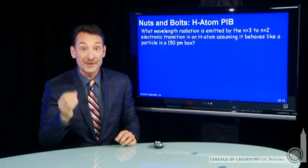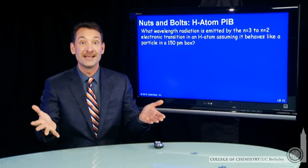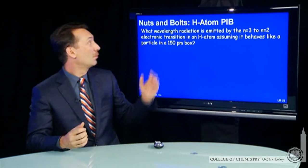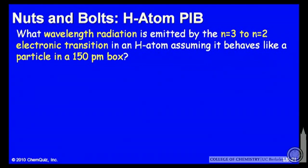So let's do a quantum mechanical calculation on a hydrogen atom. And already at this point in Chem 1, we can do a quantum mechanical calculation. So we'll take a particle, a hydrogen atom, and we're going to say, what wavelength is emitted when it does a transition from n=3 to n=2 if it's a particle in a one-dimensional box of 150 picometers?